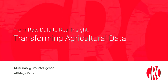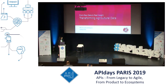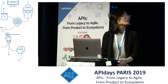All right, let's get started. Thank you everybody for coming. Quick introduction: I am Muzi, I am the API team lead from Gro Intelligence. We are a startup company focusing on agriculture data. Our headquarter is in New York but we also have an office in Nairobi, Kenya.